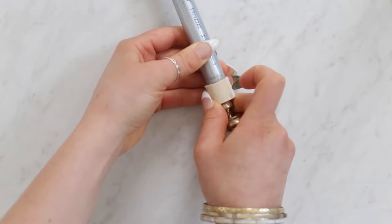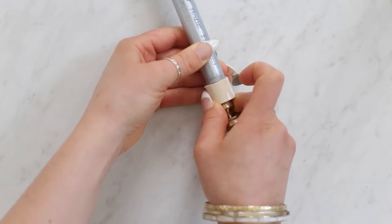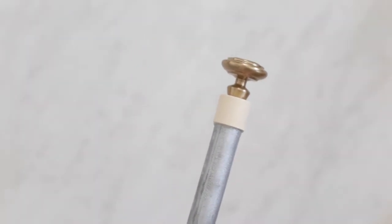I used a heavy duty glue to attach mine to the end, but you could also sand down the inside of the PVC so it slides over the conduit.